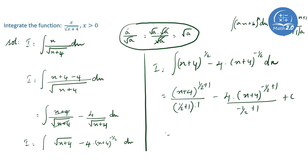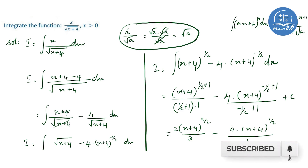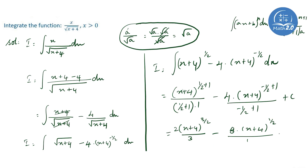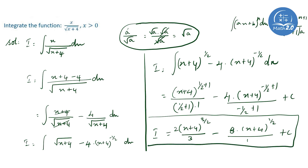In the next step, this gives us x plus 4 to the whole power 3 by 2, divided by 3 by 2, minus 4 into x plus 4 to the whole power 1 by 2, divided by 1 by 2. Simplifying, the denominator 3 by 2 gives a factor of 2 over 3, and the 4 divided by 1 by 2 gives 8. So the final answer is 2 by 3 times x plus 4 to the 3 by 2, minus 8 times x plus 4 to the 1 by 2, plus C. This is our final answer for the integral of x by root of x plus 4.